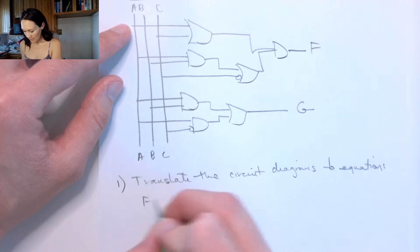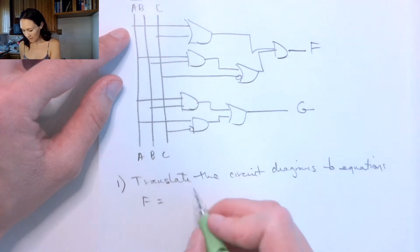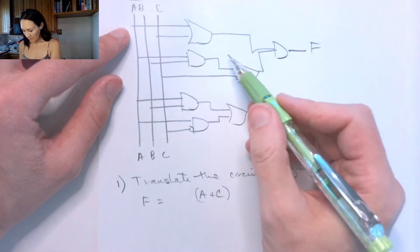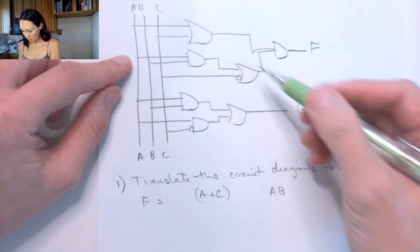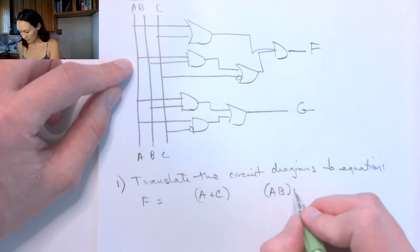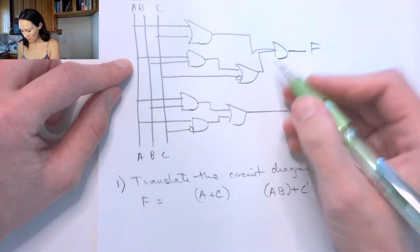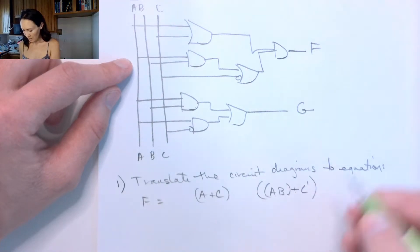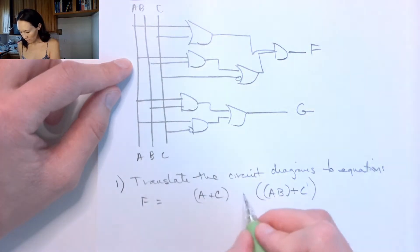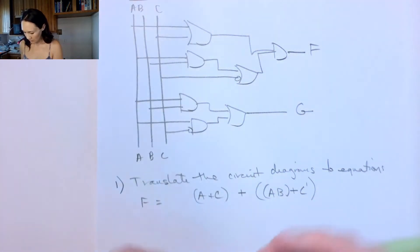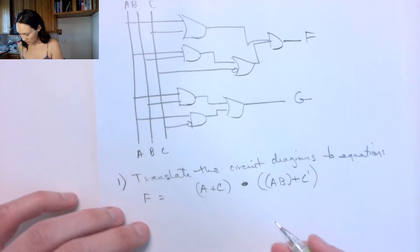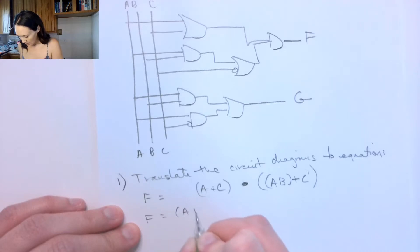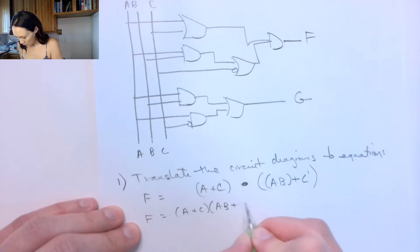So for F, we have that A and C are getting OR'd. Then we also have that A and B are getting AND'd. And the result of A and B AND'd is OR'd with not C. And then this result is then AND'd with this OR here—I'm sorry, this should be an AND. So this gives us our function for F. Let me just write that: F = (A+C) · (AB+C').